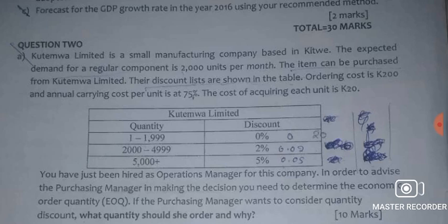The cost of acquiring each unit is 20 kwacha without any discount — that is just the normal cost. To find prices at each discount level, you calculate the discounted price for each range. Once you find the price at each discount, you know your list prices and can proceed with the calculation.